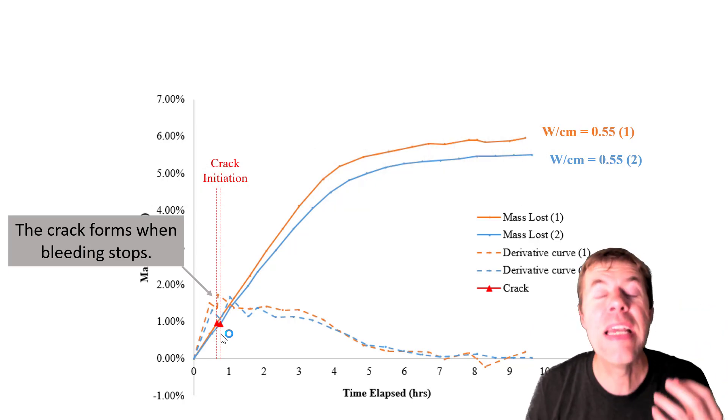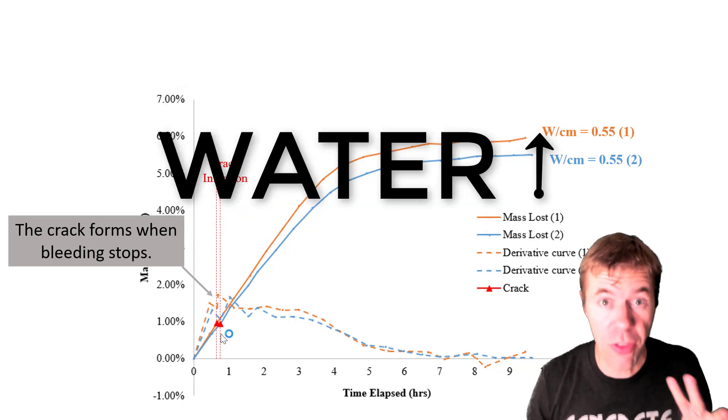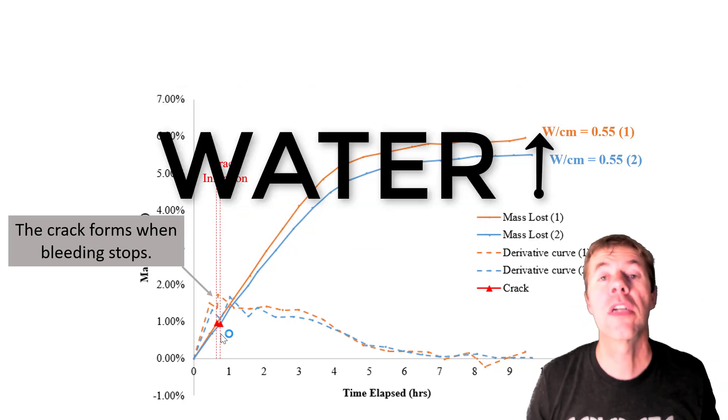That is right when the bleeding of the surface of the concrete stops. That's what the tip top of the derivative curve shows you. And we can see this with our eye. The sheen across the surface goes away. Crack forms. The evaporation rate is faster than the bleed rate. Once bleeding, that's when the heavy stuff goes to the bottom. And the wet stuff, the lighter stuff like water, comes to the top.